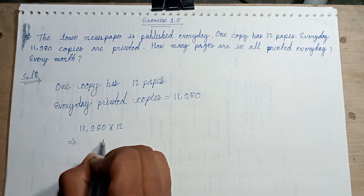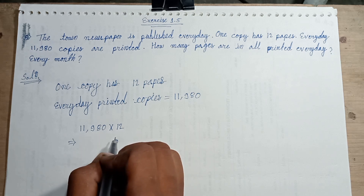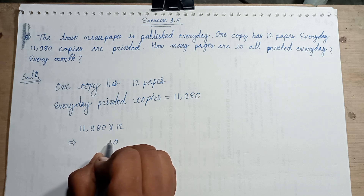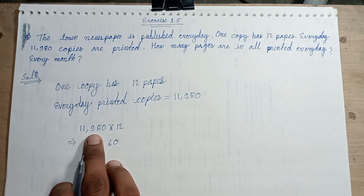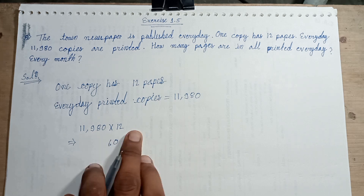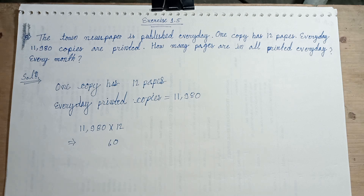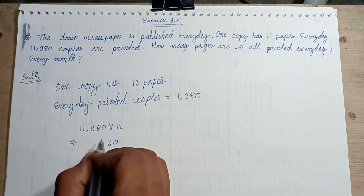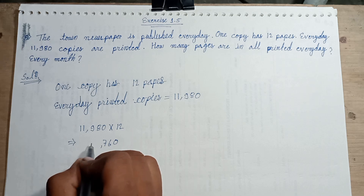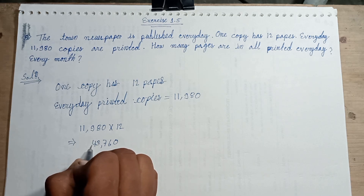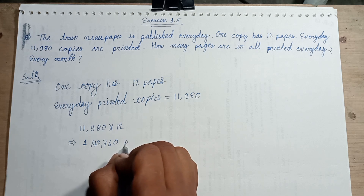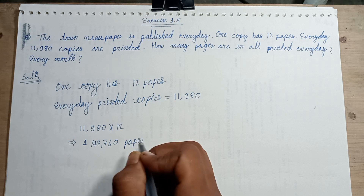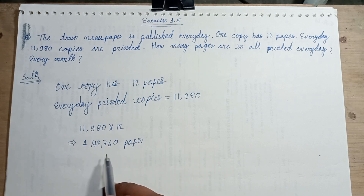12 multiplied: 12 multiplied with 0 is 0, 12 multiplied with 8 is 96, carry 6 and 9. 12 and 9 is 108, 108 and 9. The result is 143,760.